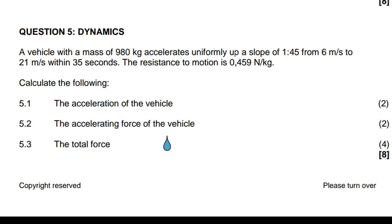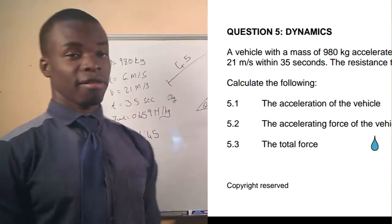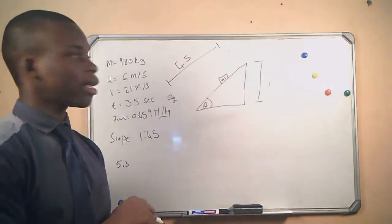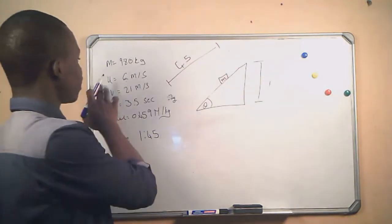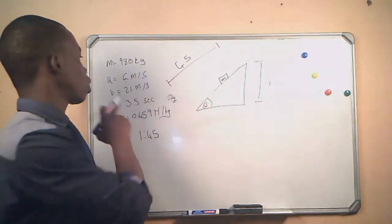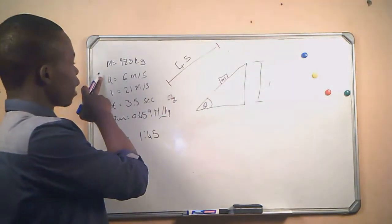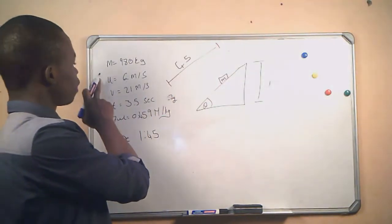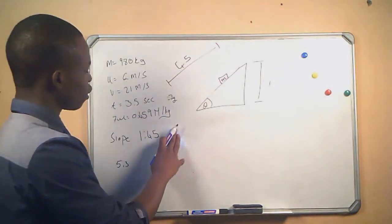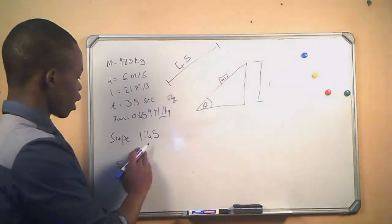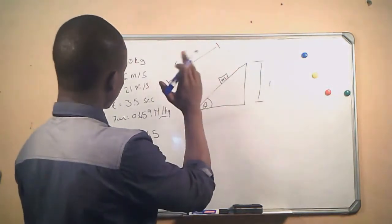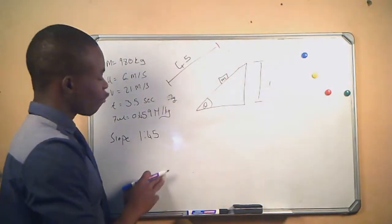The information we are given includes: the mass of the vehicle, the initial and final velocity, the time it took for the vehicle to go from initial to final velocity, the frictional force, and the slope, which is 1 in 45.